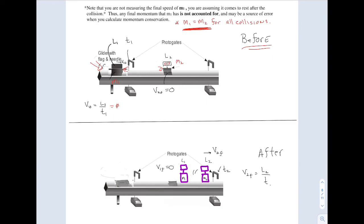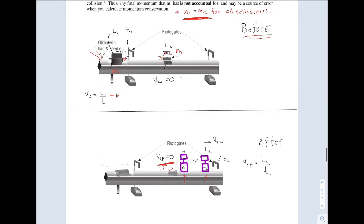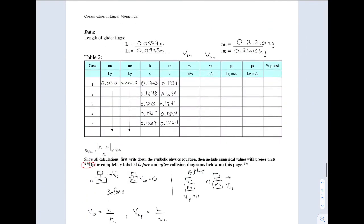For part two, both gliders have a flag — L1 is the length of the first flag and L2 is the length of the second. The before picture has number one moving and number two at rest. In the after picture, they collide: number one stops and number two goes out with the same velocity number one had, because the masses are the same. The second photo gate measures the final velocity of number two. The masses are kept the same so that number one stops, since there's no third photo gate to measure any residual velocity from number one.